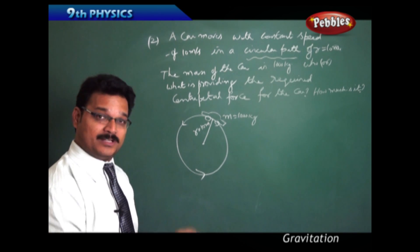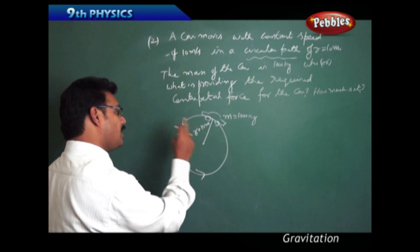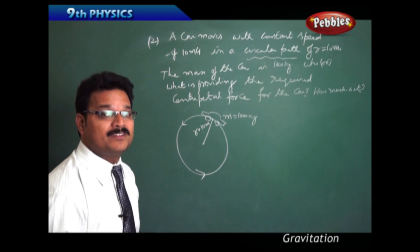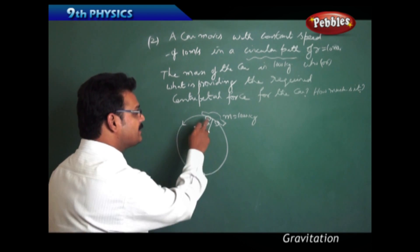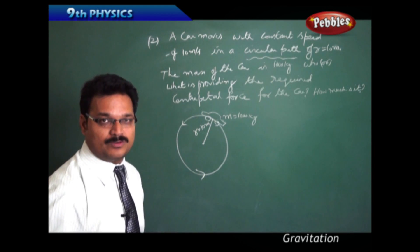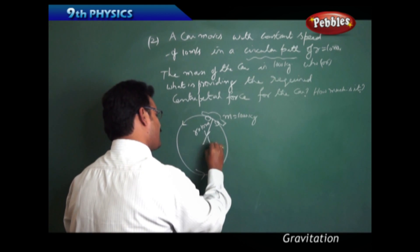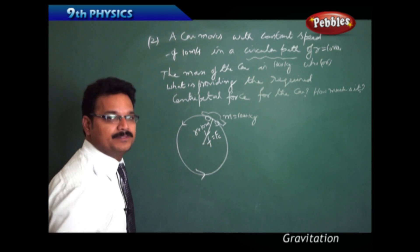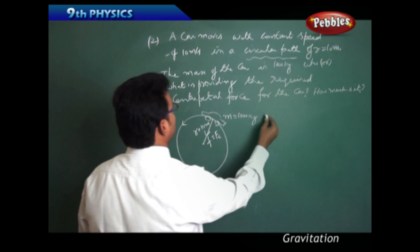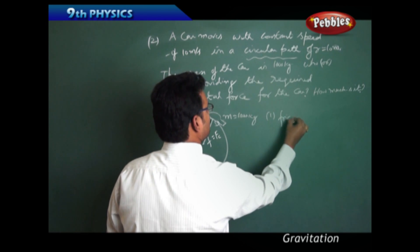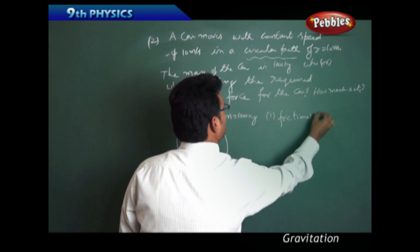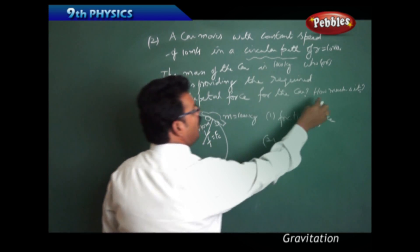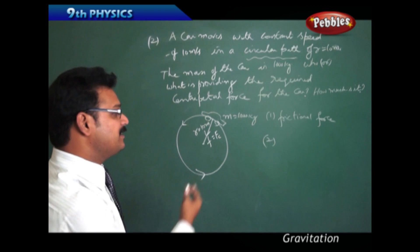Who or what is providing the required centripetal force for the car? When the car takes a circular turn, the centripetal force is provided by the frictional force between the tires of the car and the surface of the road. So the frictional force provides the necessary centripetal force. The first answer is: it is frictional force.